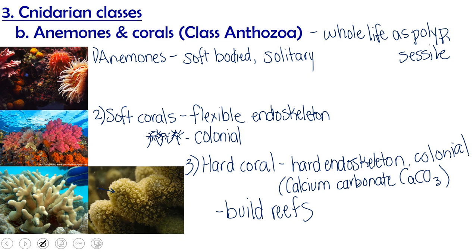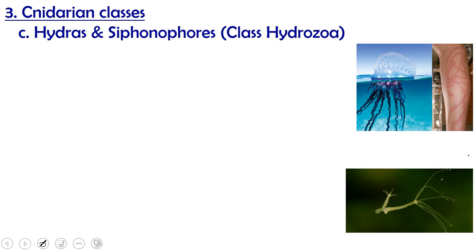Our last group then is our hydrozoans. And this includes things like our hydras, which you'll see in our lab, and our siphonophores. The siphonophores and the hydras, these guys have both medusa and polyp stages during their life. And it varies whether the polyp is the adult or the medusa is the adult, depending on the species that you're talking about.